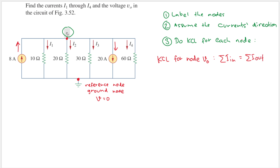The only current going into node v0 is the 8-ampere source. All the other currents — i1, i2, i3, the 20-ampere source, and i4 — are going out. So we have: 8 = i1 + i2 + i3 + 20 + i4.